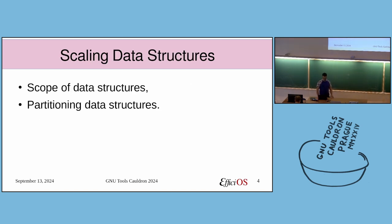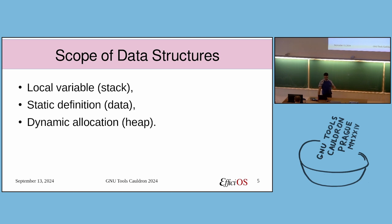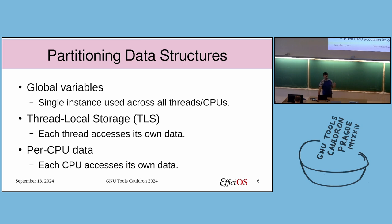Let's start slowly — it's the first talk in the morning. Scaling data structures: I'll quickly discuss scope of data structures and partitioning. We have local variables on the stack — we don't care much because they are already thread local. We have static definitions that end up in program data, which can cause concurrency issues. We have dynamic allocation on the heap, used locally by a thread or as shared data structures. For partitioning: global variables have a single instance used across all threads and CPUs, typically with locking. Thread local storage has each thread accessing its own data, statically defined. Per-CPU data has each CPU accessing its own data.